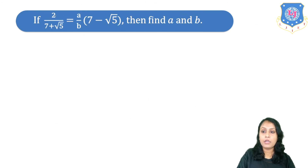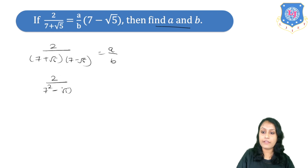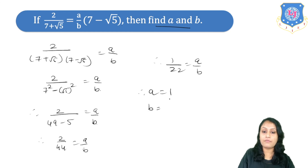Example: 2 / (7 + √5) = A/B · (7 − √5). Find the values of A and B. We bring (7 − √5) to the denominator: so we have 2 / [(7 + √5)(7 − √5)] = A/B. Using the formula A²−B², we get 7² − (√5)² = 49 − 5 = 44. So 2/44 = A/B. Simplifying, 1/22 = A/B. On comparing, A = 1 and B = 22.